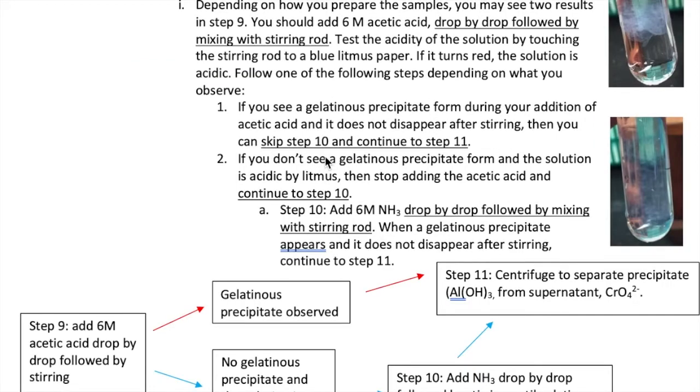Now what happens if you don't see a gelatinous precipitate and then the solution is now acidic by litmus? You also stop adding your acetic acid, but instead of going to step 11 you're going to continue to step 10 and you're going to add one drop of ammonia, mix, and then observe if a precipitate forms. If you don't see a precipitate, you're going to repeat the dropwise addition of ammonia until you see a gelatinous precipitate. Again, you should see a precipitate similar to the one shown in the pictures right here, either the top one or the bottom one. Make sure that that precipitate stays in your test tube upon stirring for at least 20 seconds. Once the precipitate appears, go to step 11 and centrifuge to separate the supernatant from the pellet.